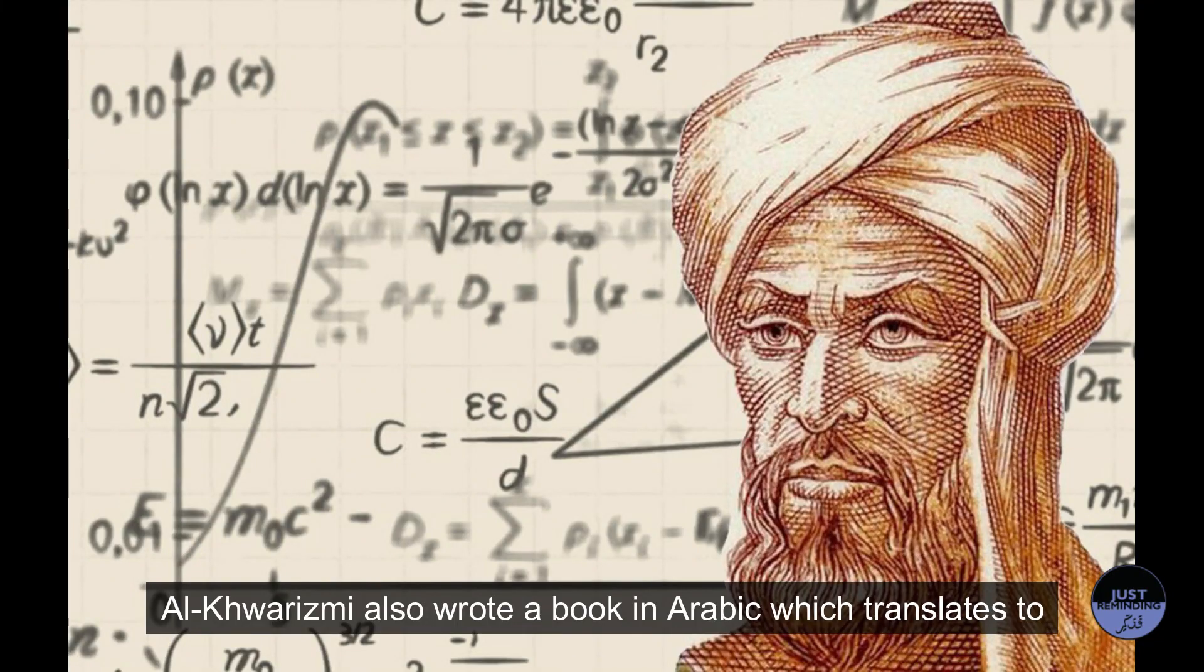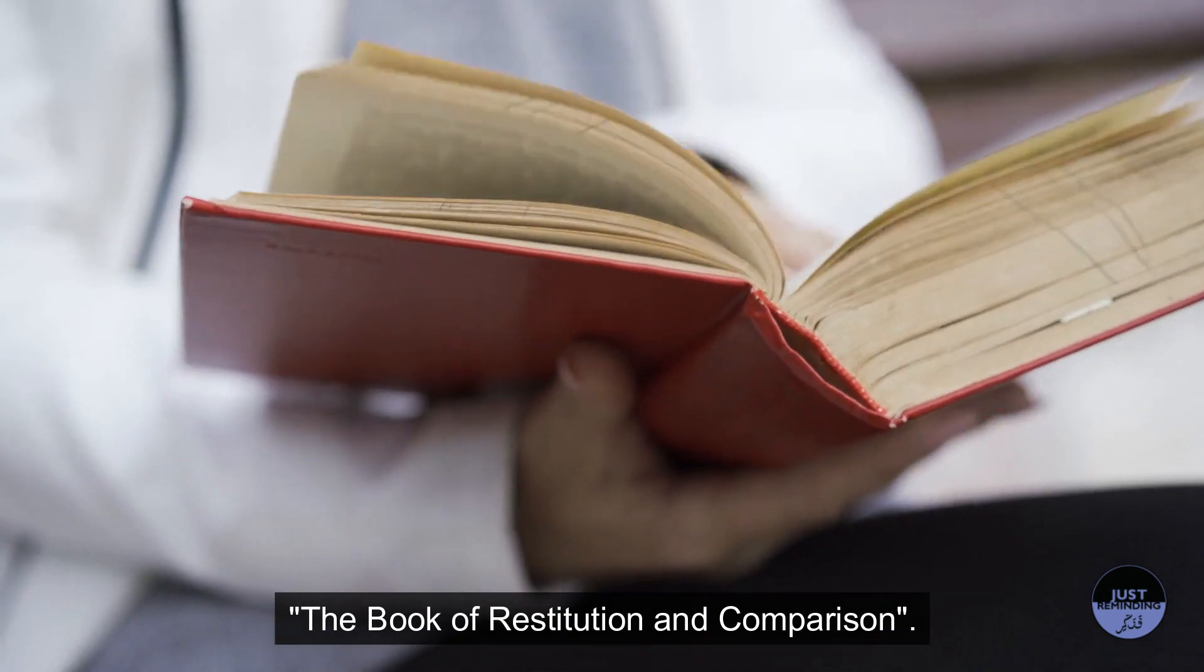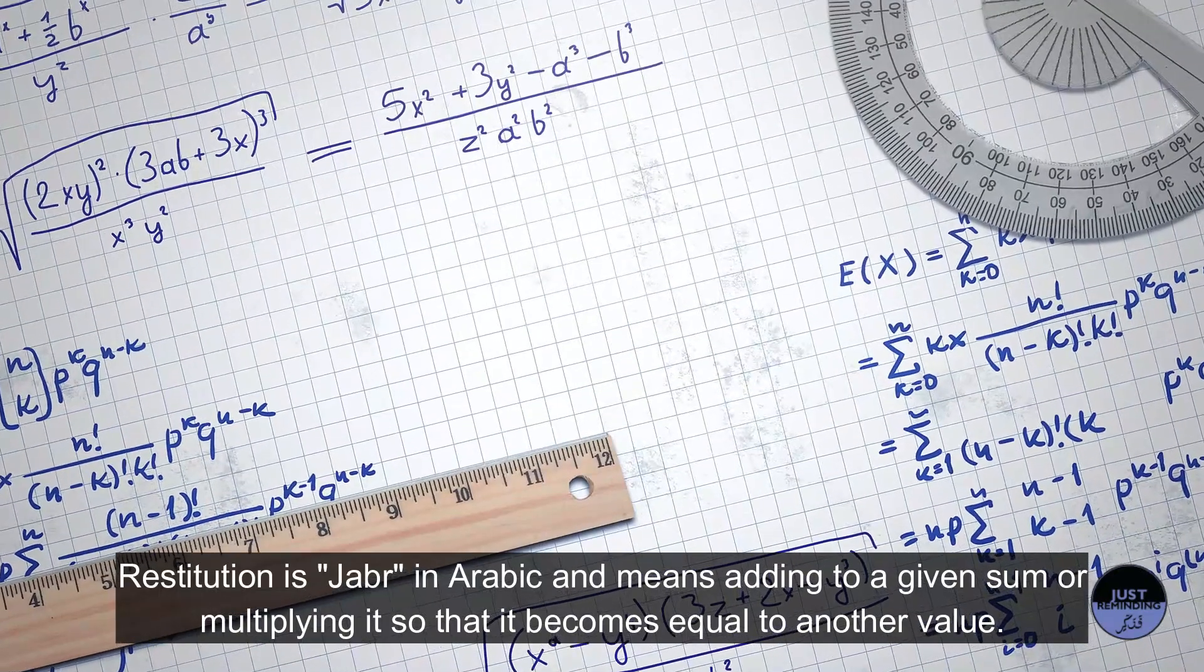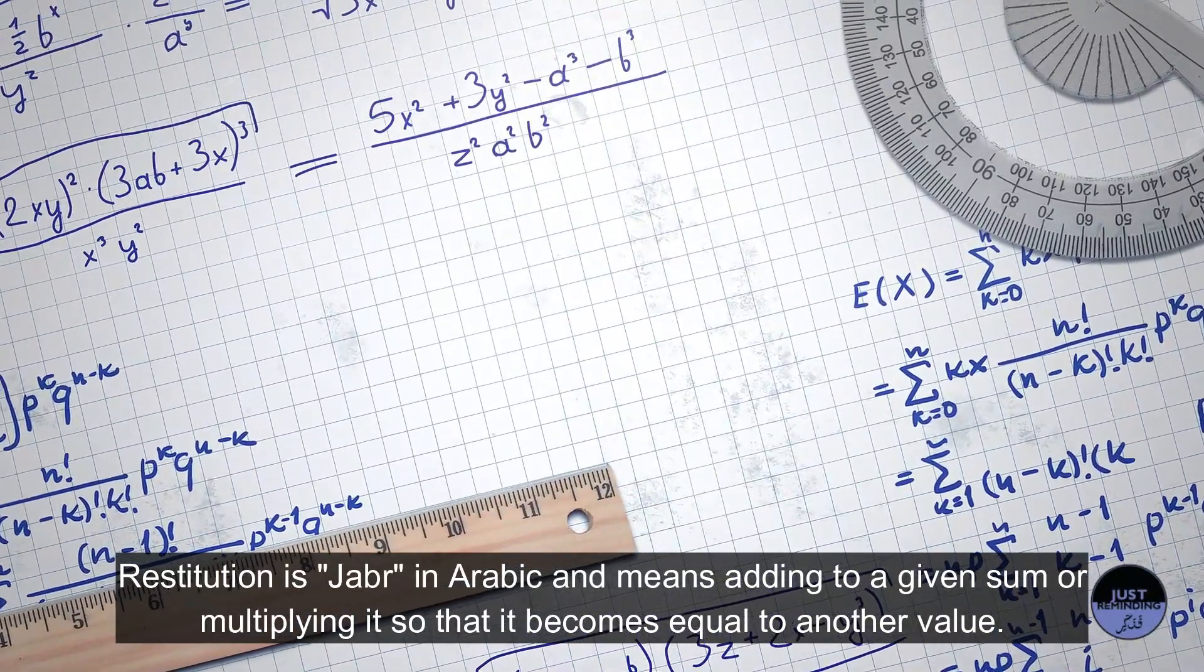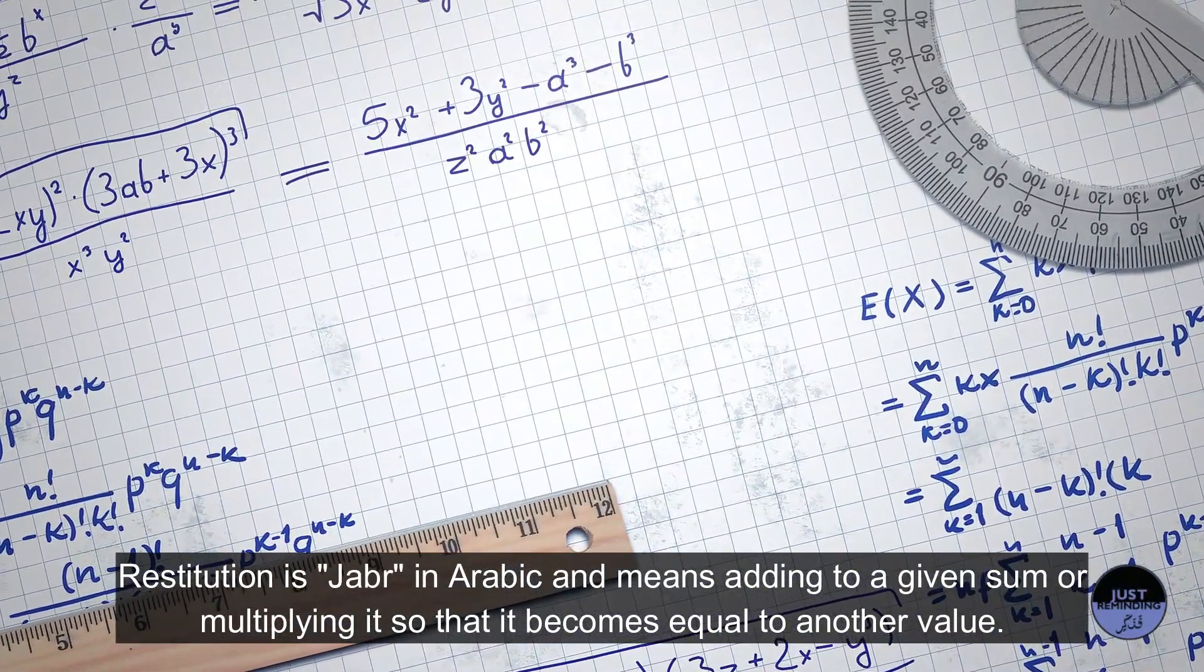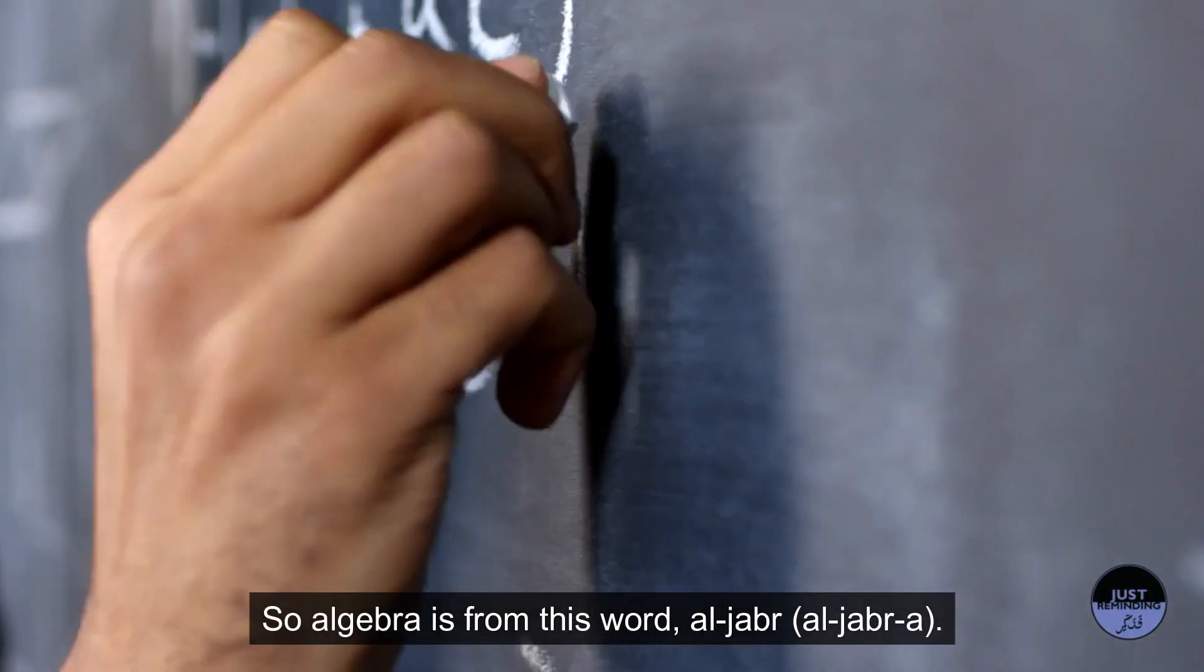Al-Khwarizmi also wrote a book in Arabic which translates to the Book of Restitution and Comparison. Restitution is Jabar in Arabic and means adding to a given sum or multiplying it so that it becomes equal to another value. So algebra is from this word, Al-Jabar.